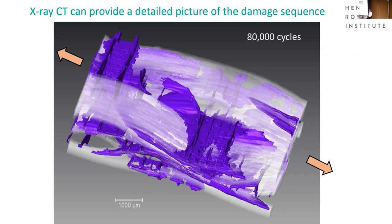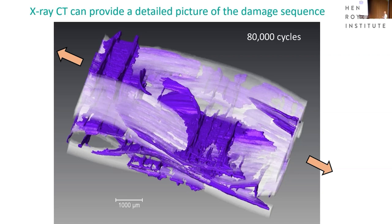In engineering materials, we need to understand damage. We need to make materials that are damage tolerant and we need models that tell us how damage will occur and propagate. This enables us to identify non-destructive testing procedures to interrogate the material. If we know cracks are going to grow at a certain rate, we can calculate the period between which we need to make inspections, assuring the safe life of a component, whether nuclear, aero engine, or less structurally critical.